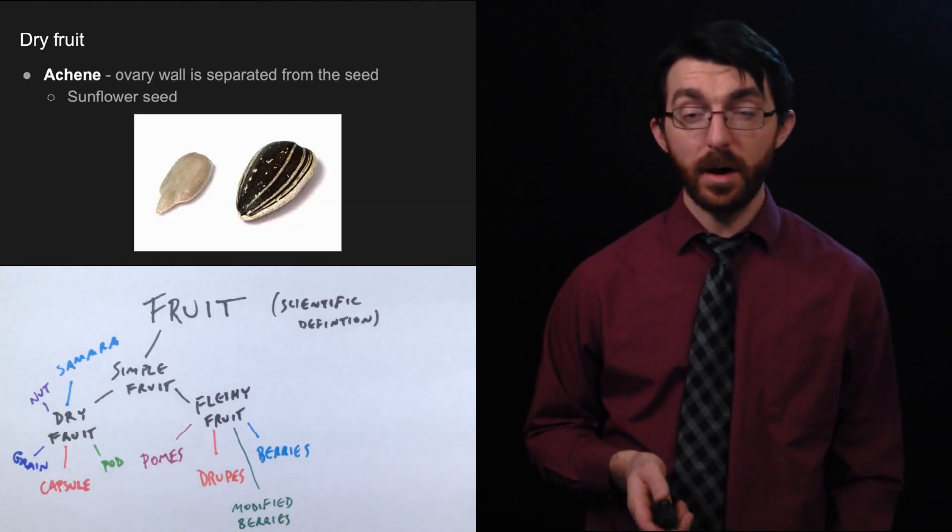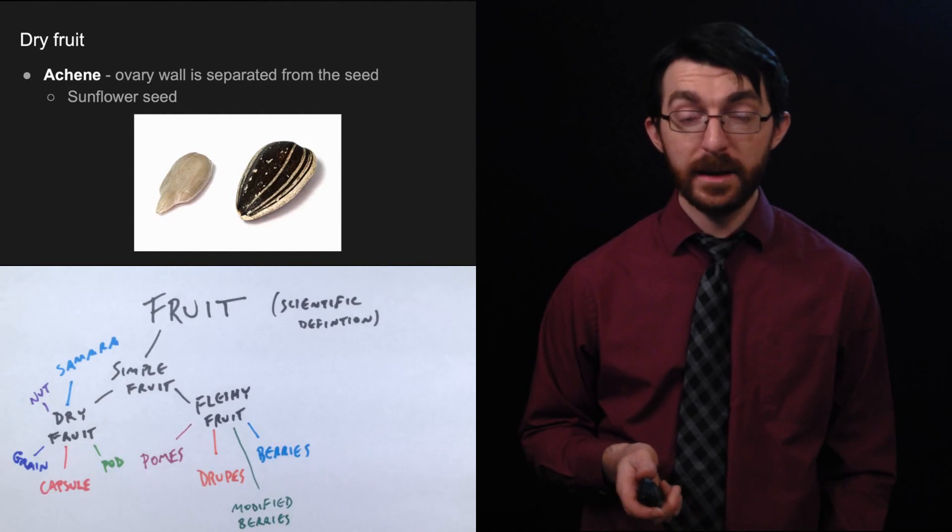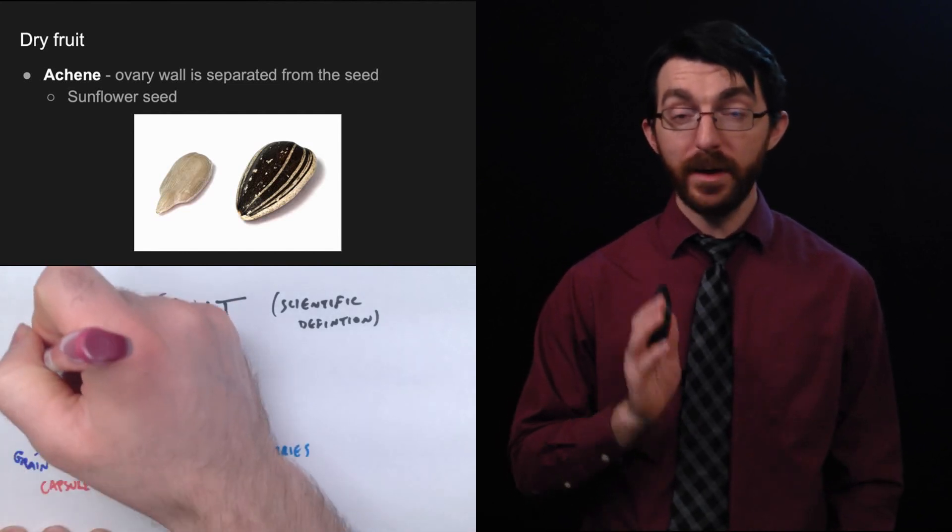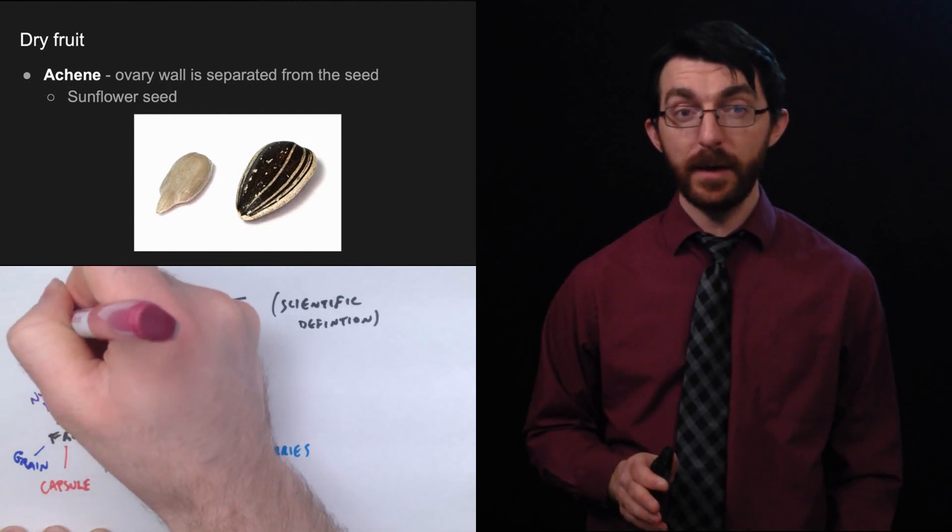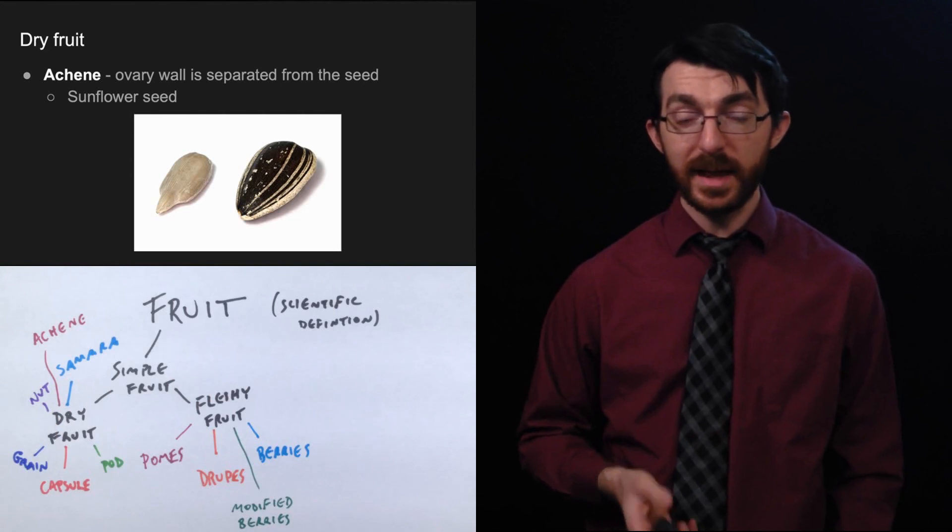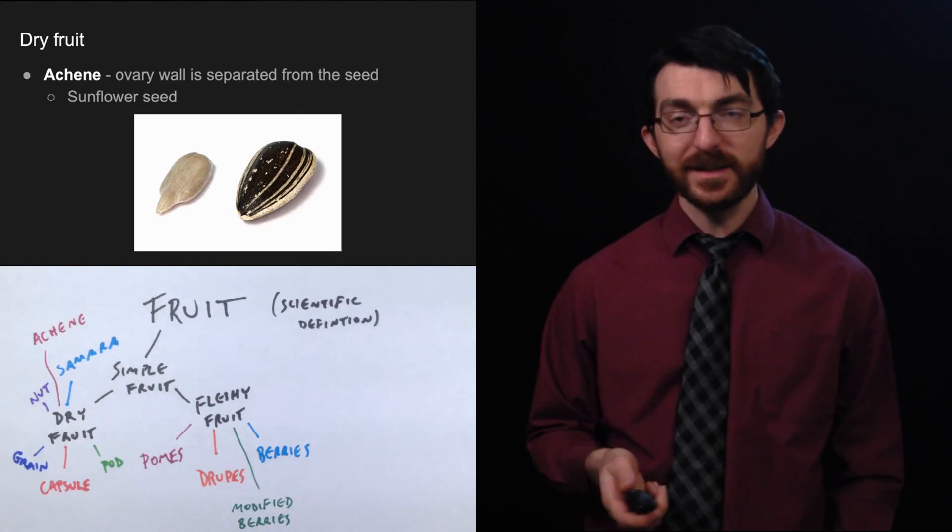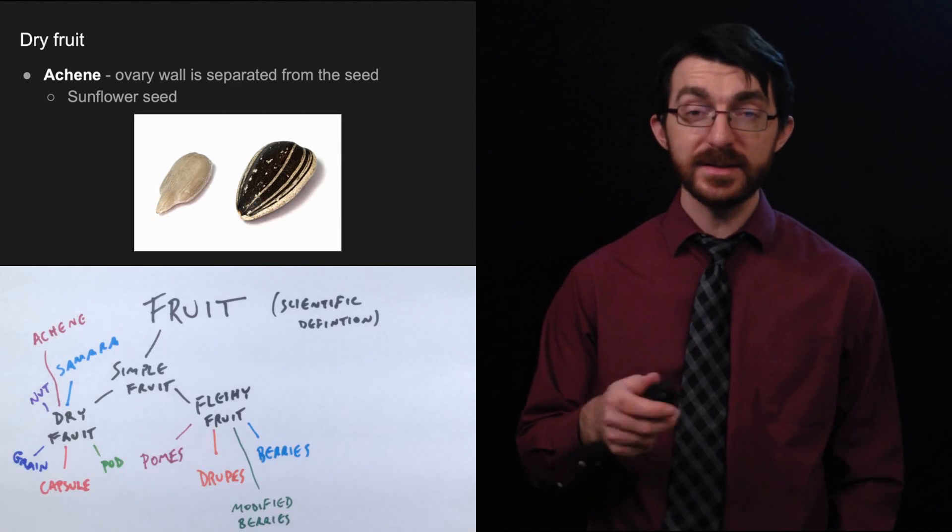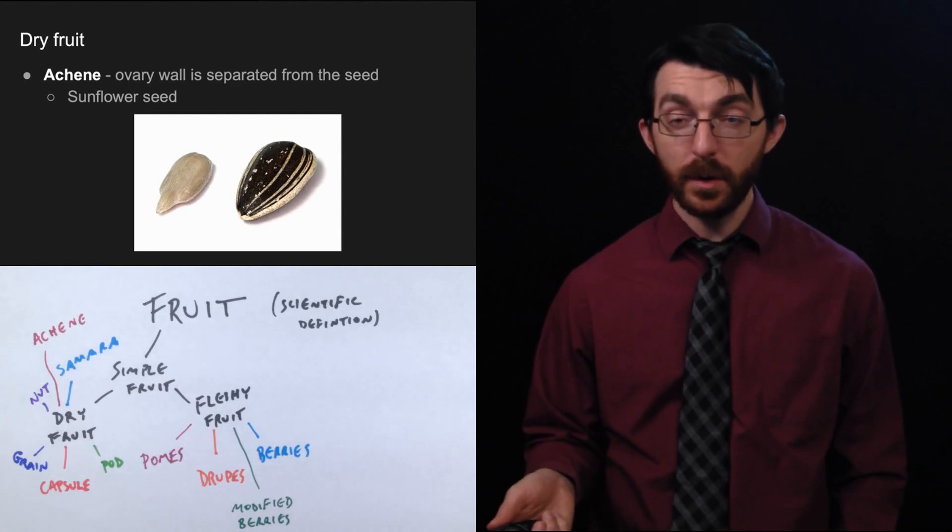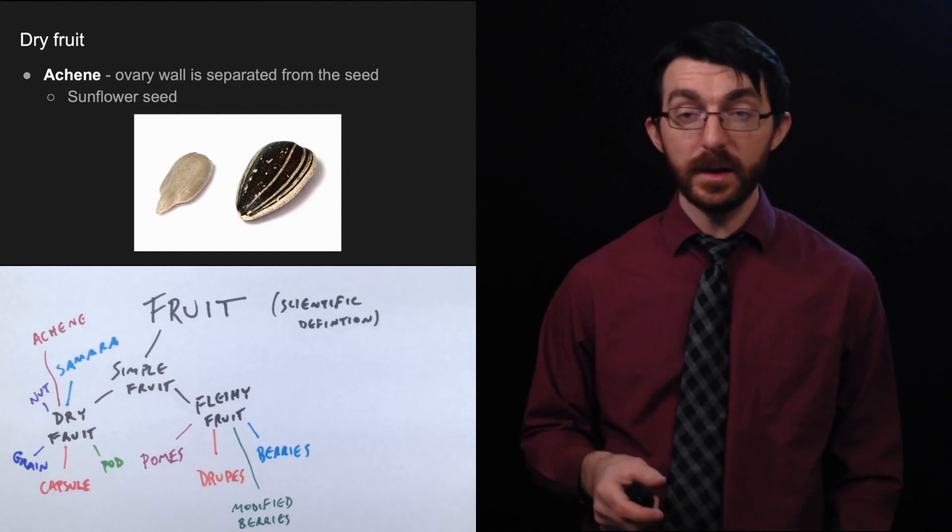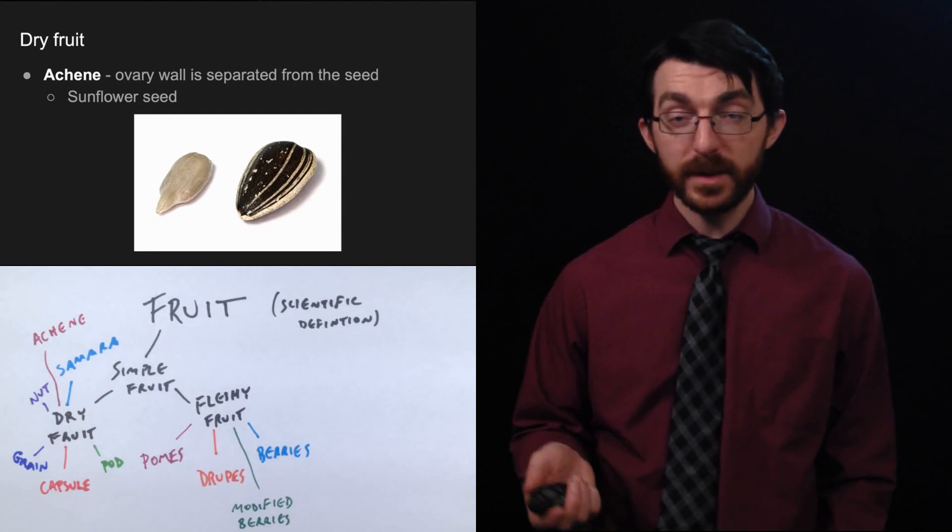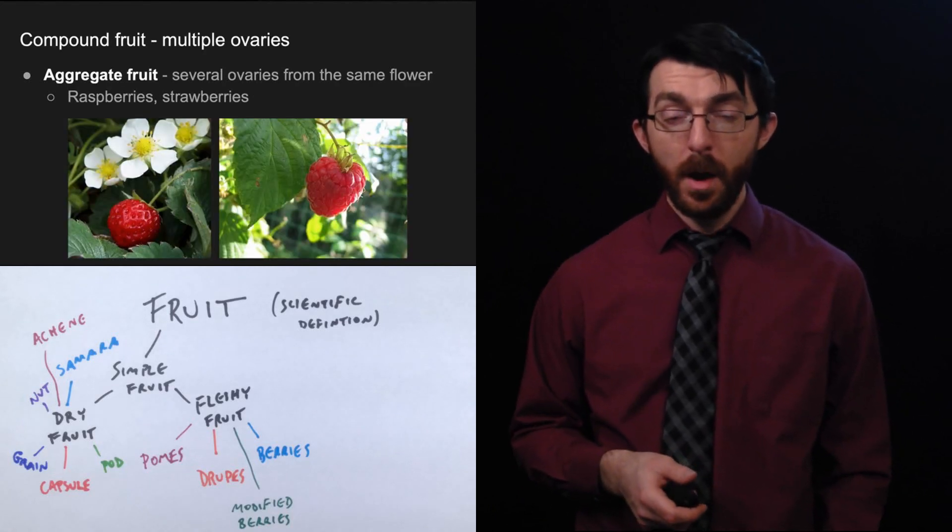Okay. Another kind of dry fruit is called an achene. And this is unlike a grain because the ovary wall is separated from the seed. So a good example, that would be a sunflower seed. If you've ever eaten sunflower seeds, you know, it's like a seed inside of a seed. Well, it's a seed inside of a seed case. Well, actually that seed case is the ovary wall. And so the ovary wall is separated from the seed inside. If they were joined together, we would call it grain because they're separated. It's an achene.